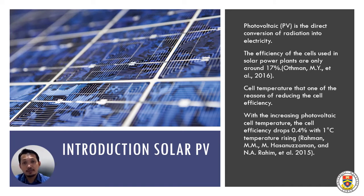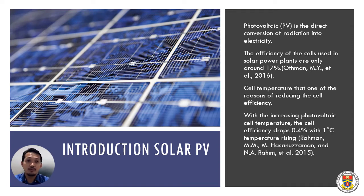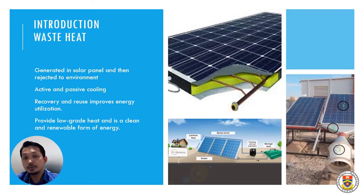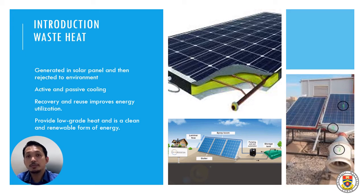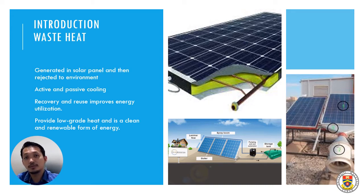A study has reported that with increased photovoltaic cell temperature, the cell efficiency drops by 0.4%, which is basically quite a lot. Normally, to control the surface temperature of a solar PV, there are many types of cooling methods available. They can be categorized into two major types: one is passive cooling and the other one is active cooling.